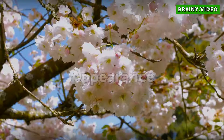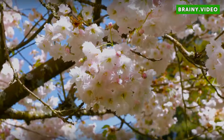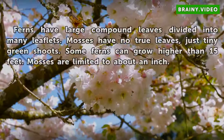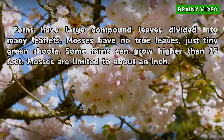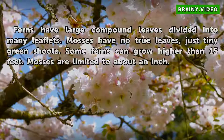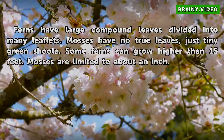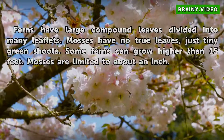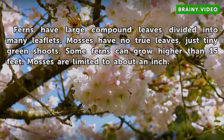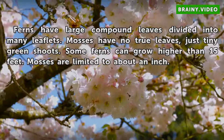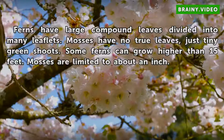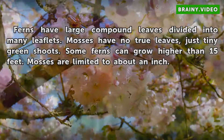Appearance: ferns have large compound leaves divided into many leaflets, while mosses have no true leaves, just tiny green shoots. Some ferns can grow higher than 15 feet, whereas mosses are limited to about an inch.